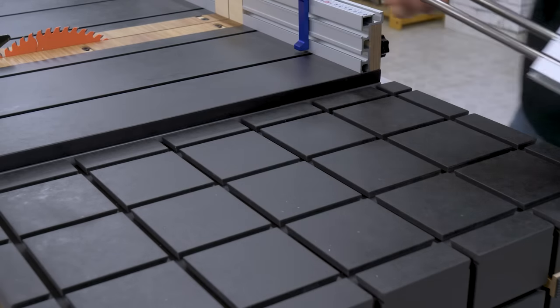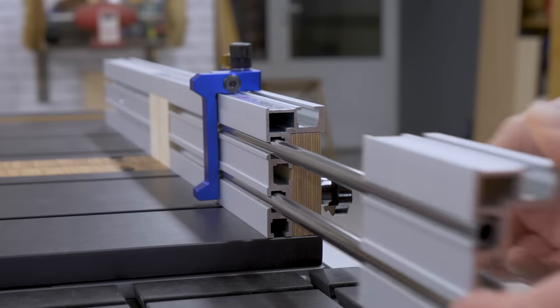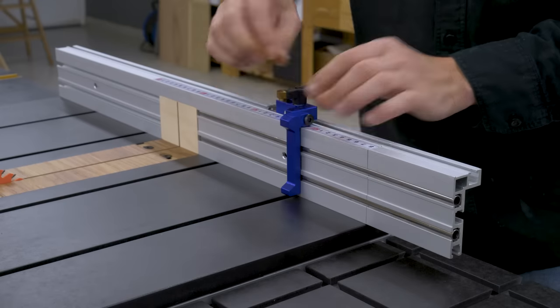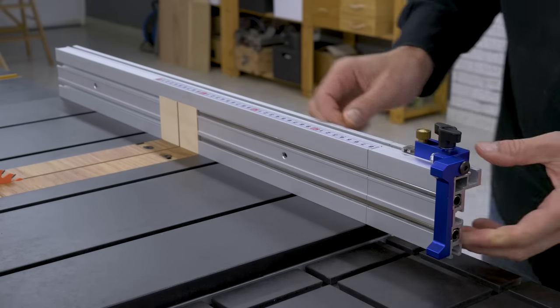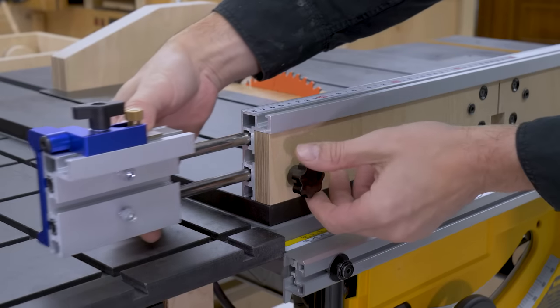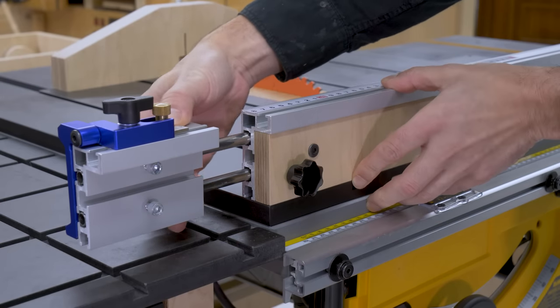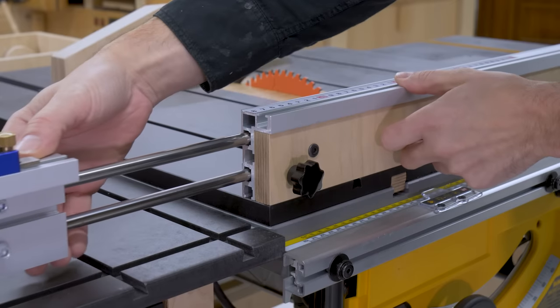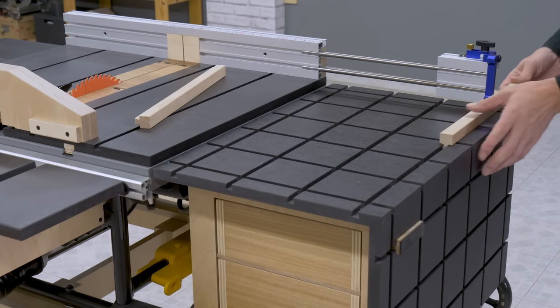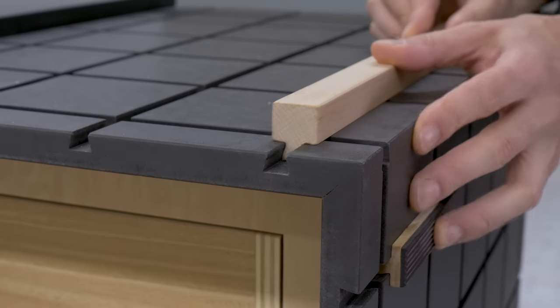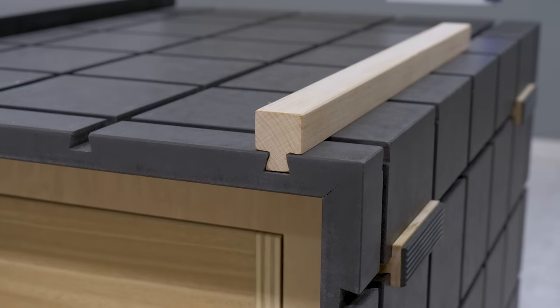I made a fence extension so that I can extend the track stop and cut longer work pieces. In these cases, the wooden stops I made for use with the assembly table will come in handy.